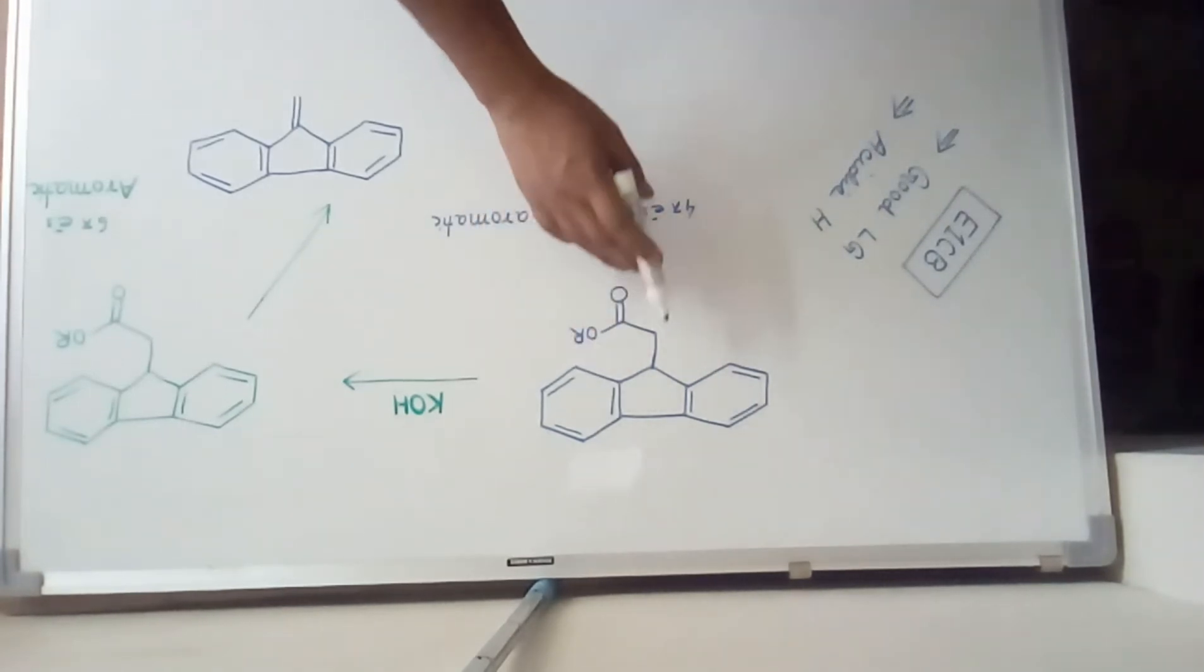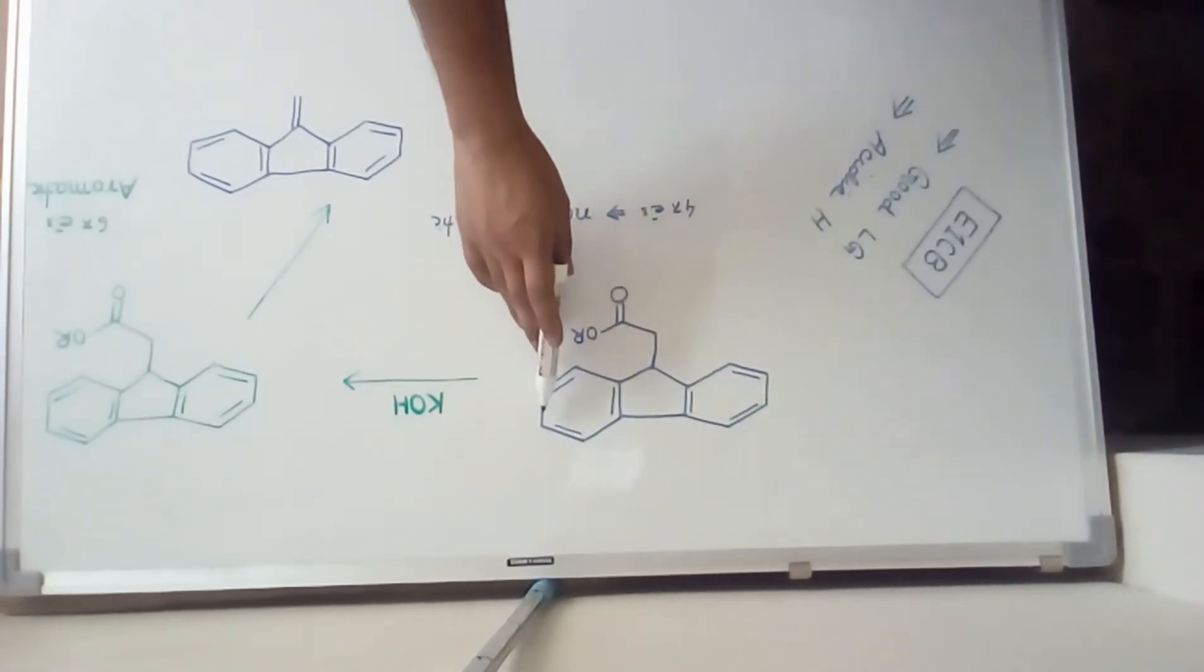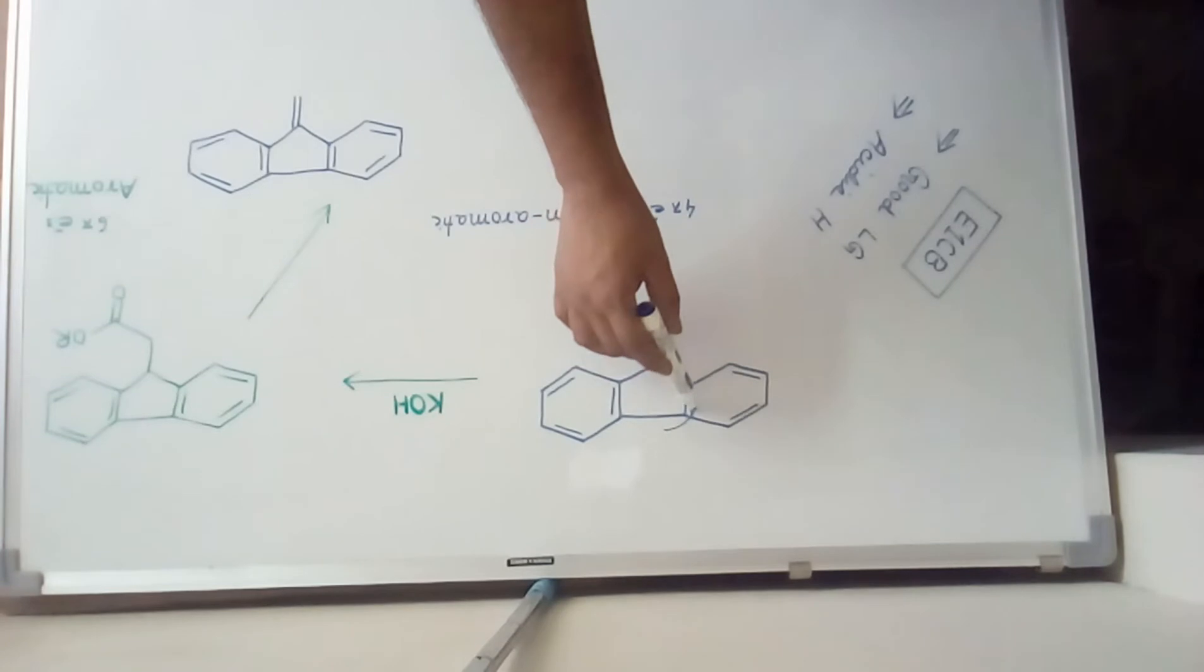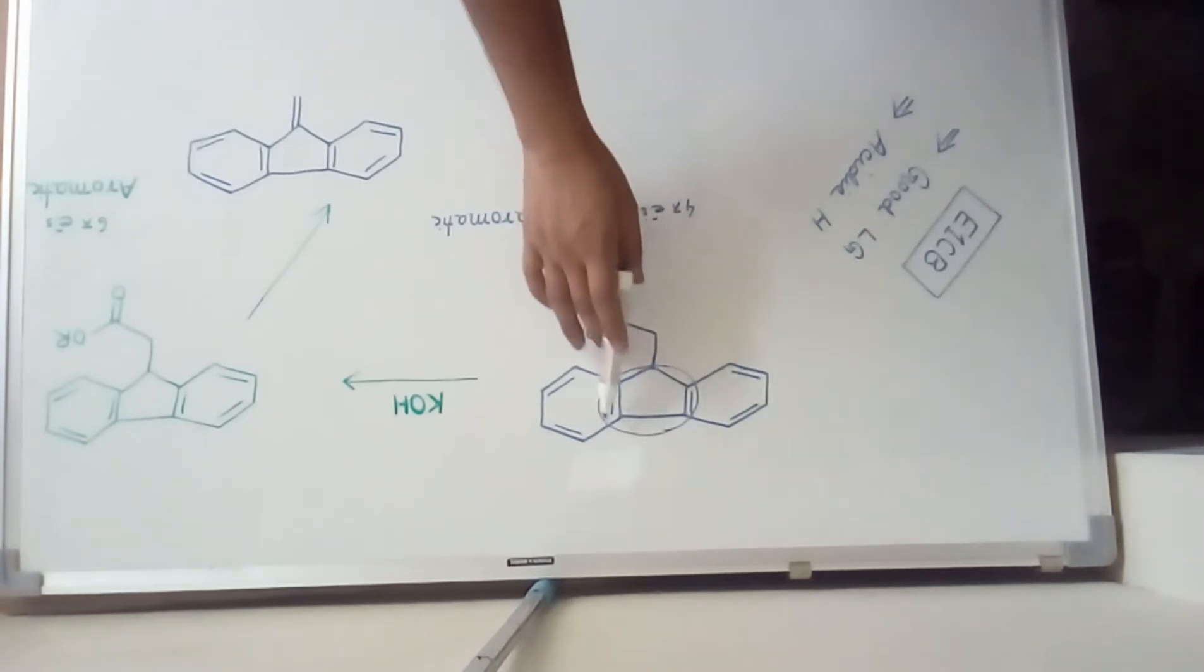In the given species we have two aromatic fragments and in the center we have four pi electrons. This indicates that this is non-aromatic. It is less stable.